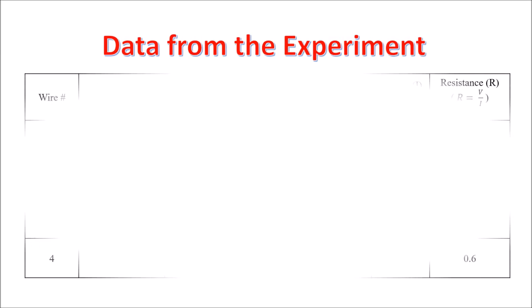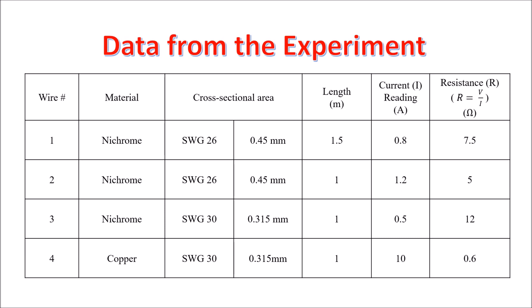So, let's have the data that we get from the experiment. The materials we used are Nichrome wire and copper wire. They have different cross-sectional area and different length. And we took the current reading in ampere.